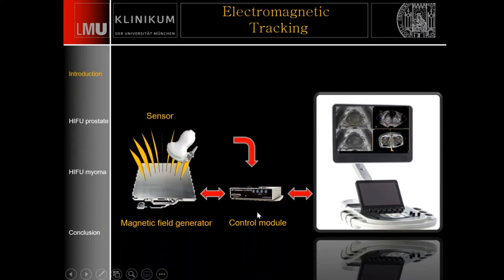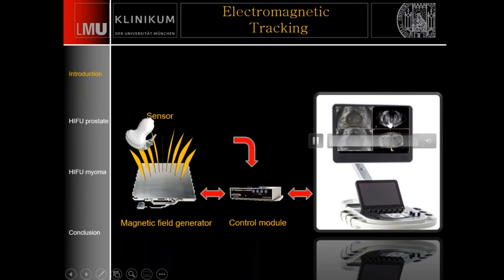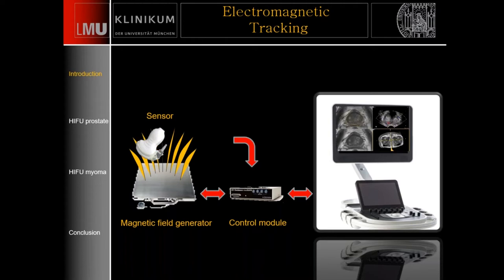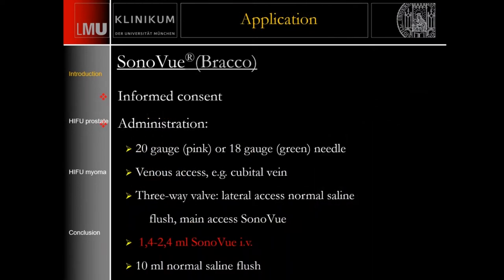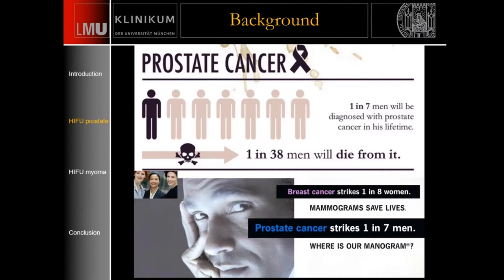Once registration is complete, you see the prostate image with the MRI and ultrasound side by side. Different layouts are available depending on your preference. If you inject contrast for the prostate, the recommended dose is 1.4 to 2.4 cc of contrast followed by 10 cc of saline. Prostate cancer has a major influence in the men's world, causing significant mortality — similar to breast cancer programs for women, we need a comparable screening technique for men.